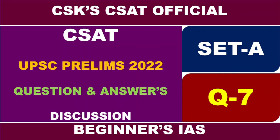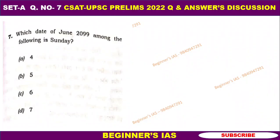Hello my dear aspirants, welcome you all. In this session we are going to see set a question number 7 related to the CSAT paper, that is UPPSC PLM 2022. Let us see the question first. Which date of June 2099 among the following is Sunday?